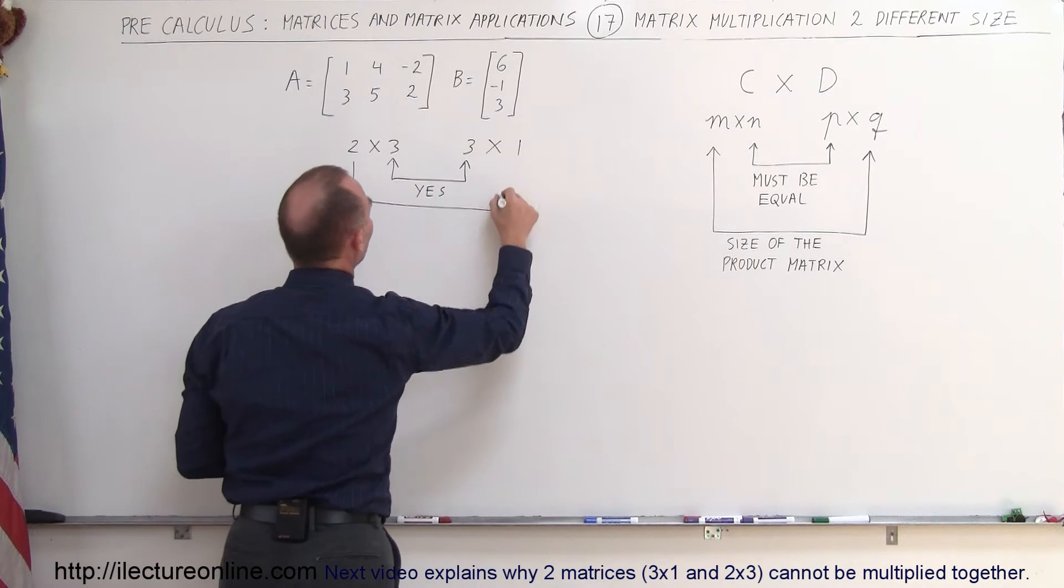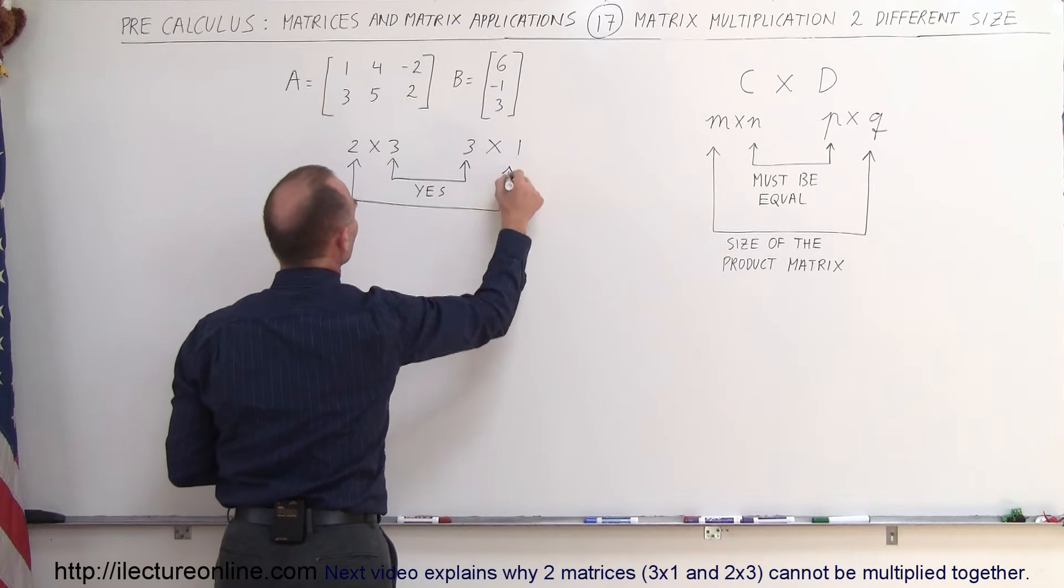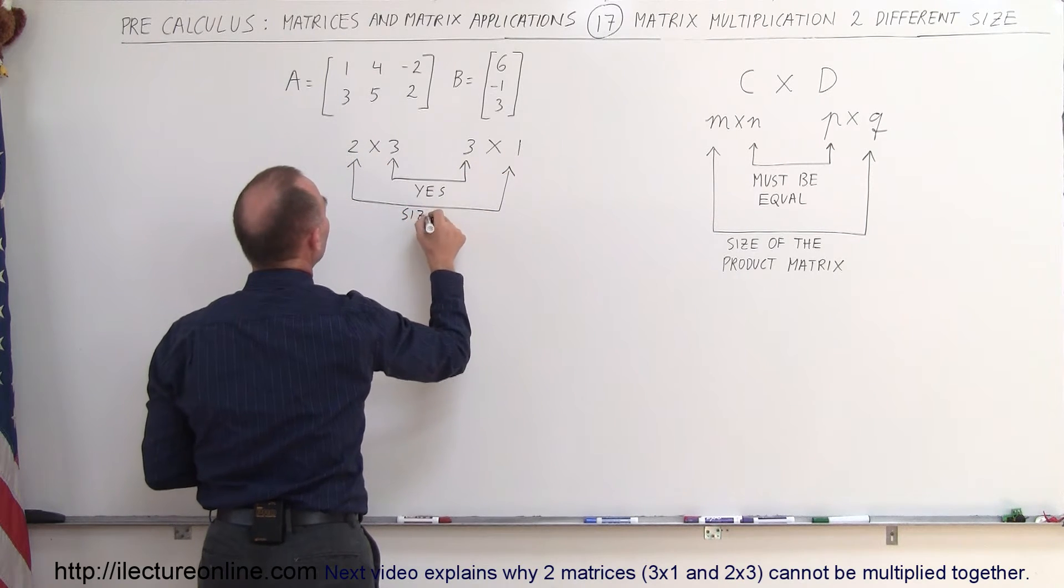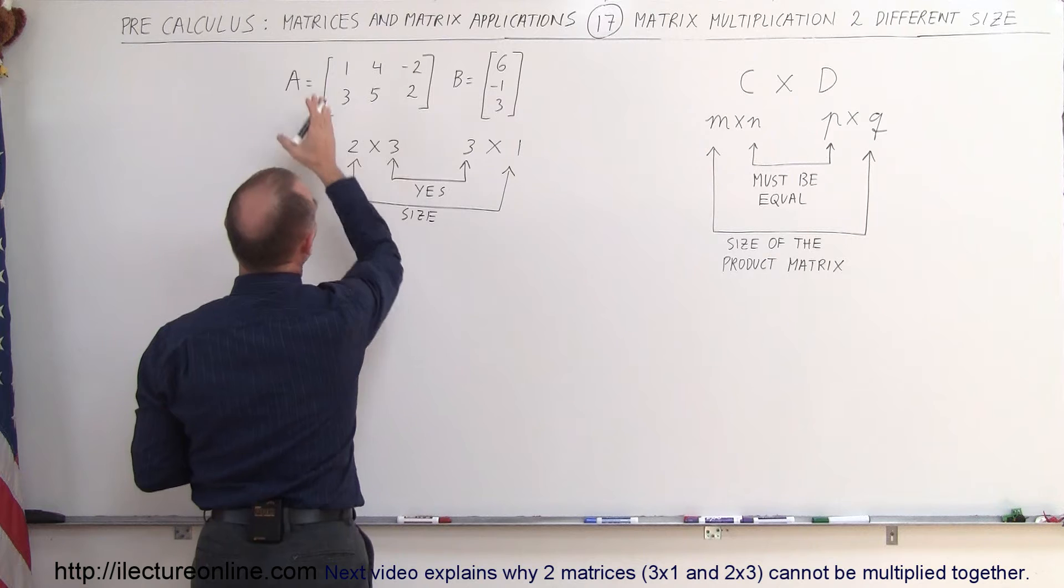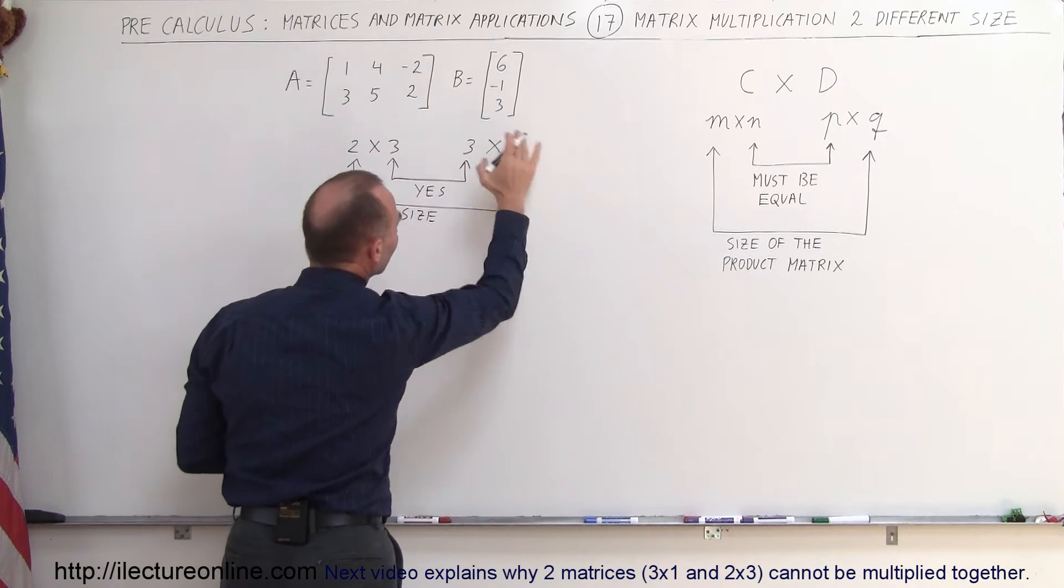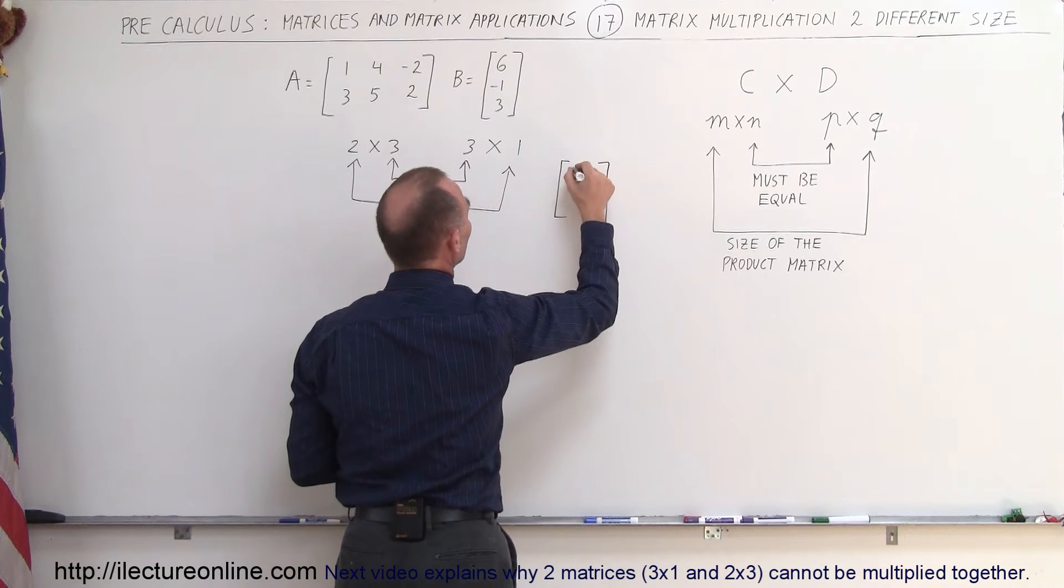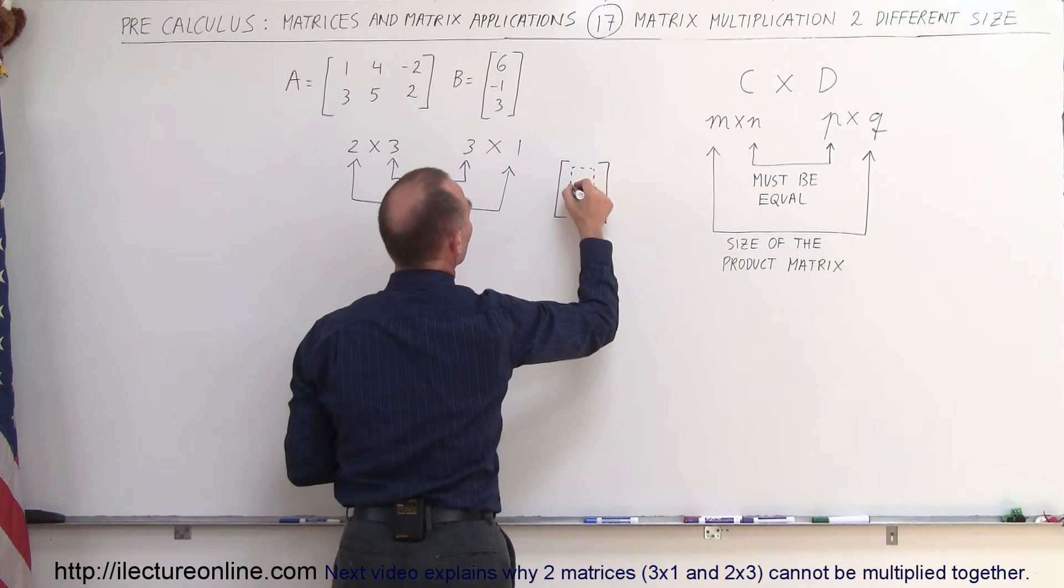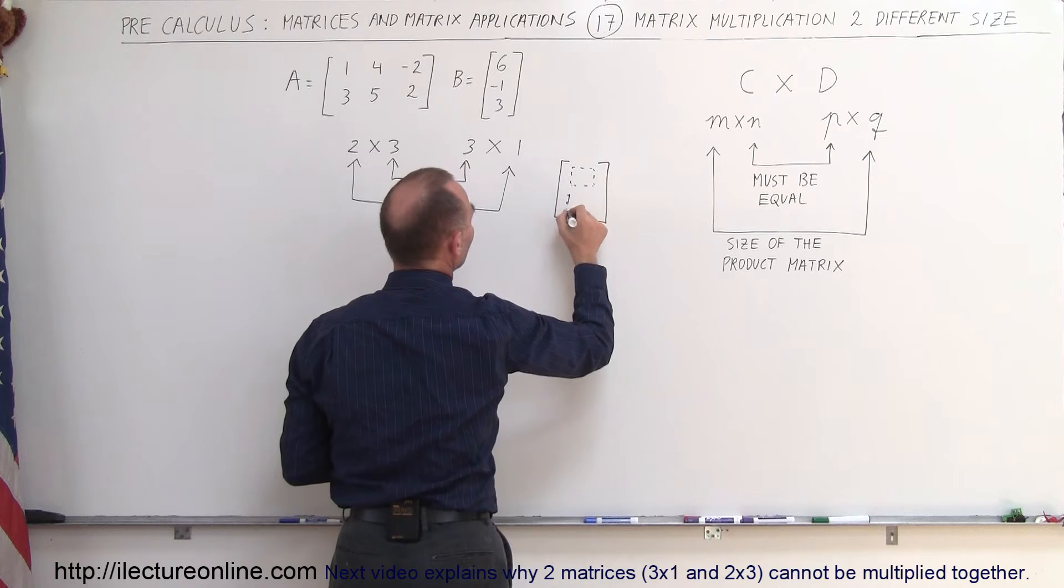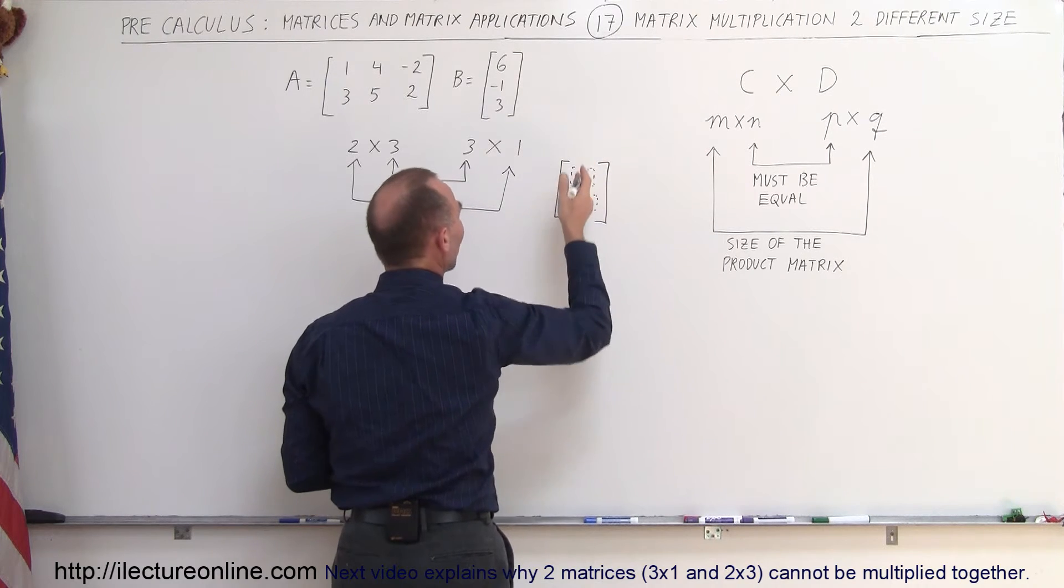And secondly, the size of the resulting product matrix, so the size will be a two, that will be a two row times one column matrix. So two row times one column matrix means that you'll have a matrix with two rows like this, one row, here's the second row, and simply one column.